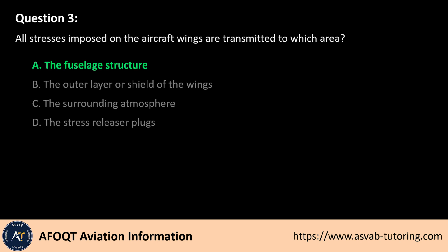The answer is A. The wings of an aircraft are designed to transfer all aerodynamic stresses, including lift, drag, and bending moments, to the fuselage. The fuselage acts as the central supporting structure, distributing these forces throughout the aircraft. The outer layer of the wings, atmosphere, and stress releaser plugs do not bear or transmit these stresses. Thus, the fuselage is the primary load-bearing structure for wing stresses.